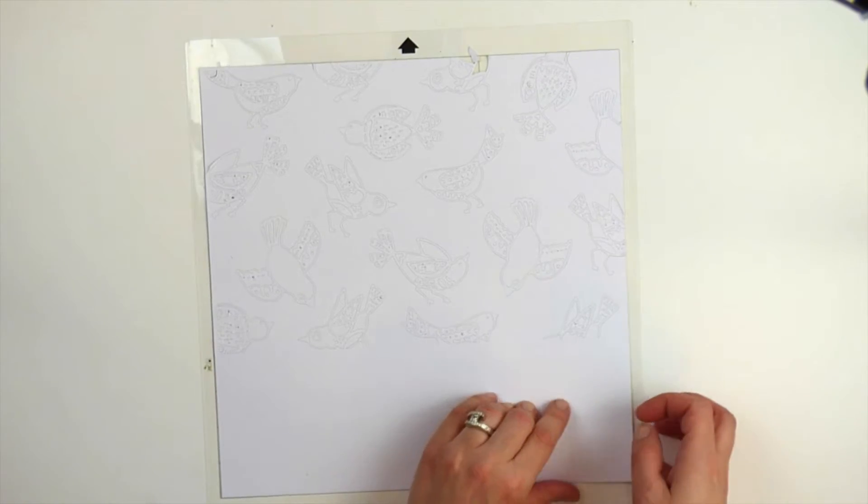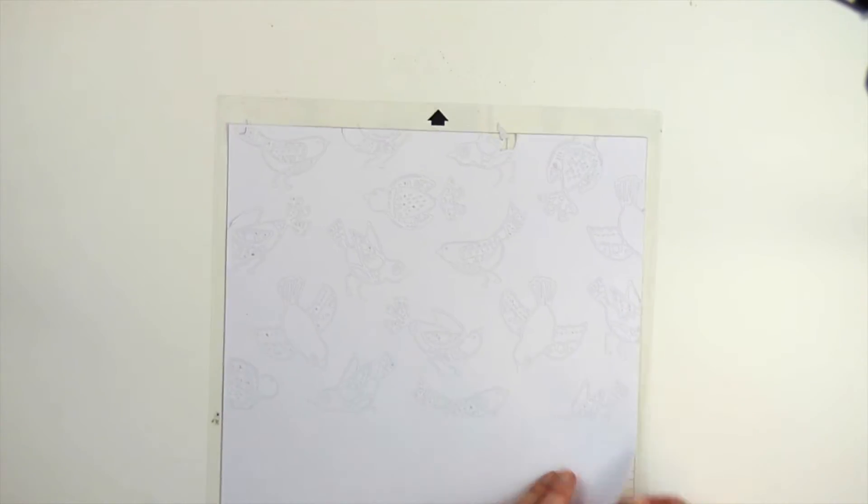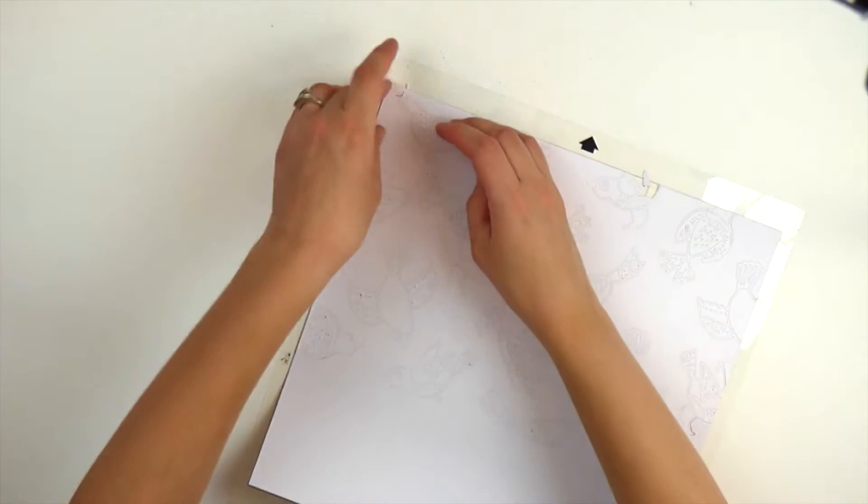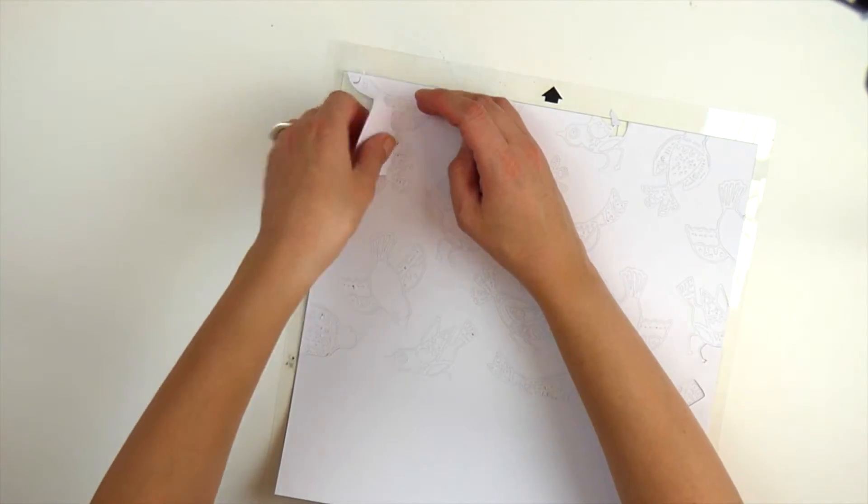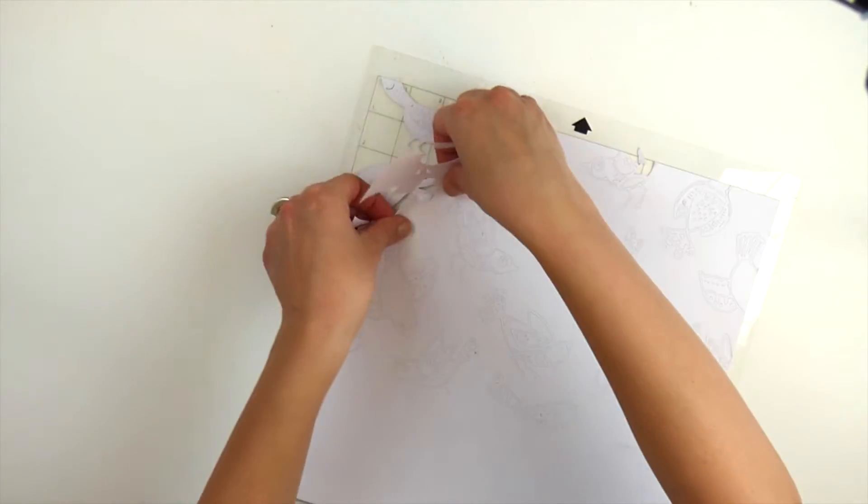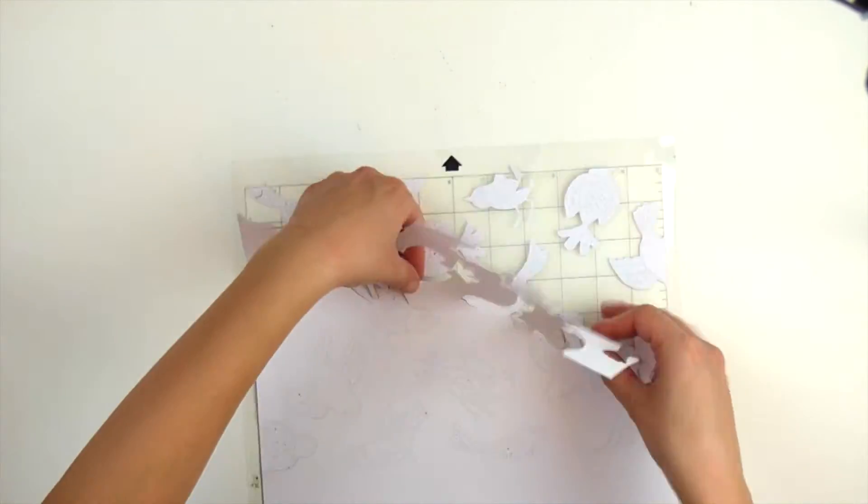And then very carefully peel the paper off the mat. So I wasn't going to use the white background originally but hey just go with the flow. I ended up using the white so just carefully peel it off the mat.